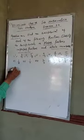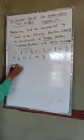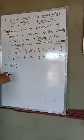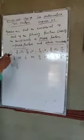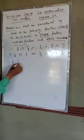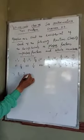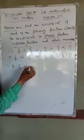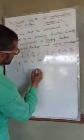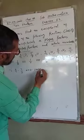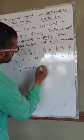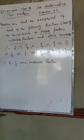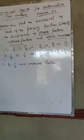Part number one mein fraction 3 by 7 hai. Iska jo reciprocal hai wo 7 by 3 hai, kyunki iska jo numerator hai wo denominator ban jaata hai aur denominator jo hai numerator ban jaata hai. To yahan ham dekhte hain ki numerator is greater than the denominator.